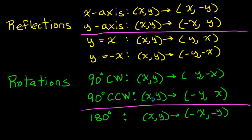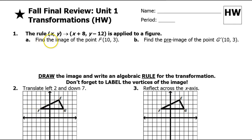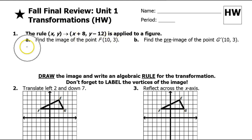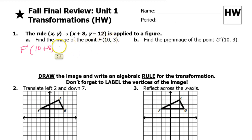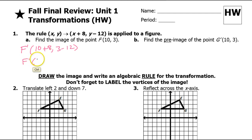Pause the video, see if you can write this list down on a sheet of scratch paper without looking, then check your answers. For problem number one, they're giving us the rule: x, y becomes x plus 8, y minus 12. What would be the image of the point 10, 3? We'd simply apply the rule. The image — we call it f prime — is going to be 10 plus 8 and 3 minus 12, so f prime is 18, negative 9.